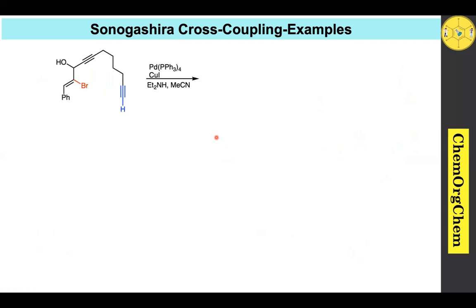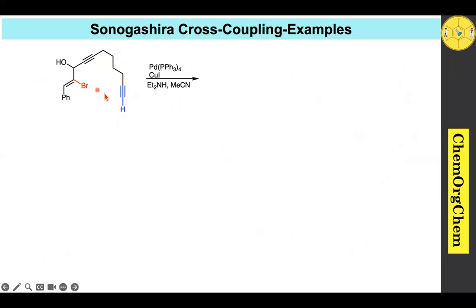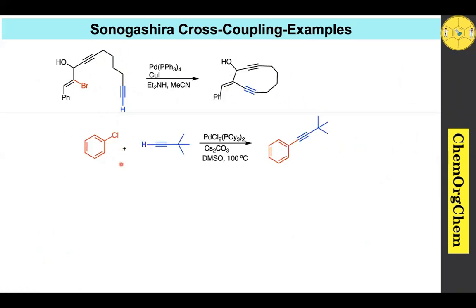Example 8: Up to now we have seen intermolecular Sonogashira cross-coupling. This example demonstrates intramolecular Sonogashira cross-coupling. Both the bromide substituent and the alkyne are present within the same molecule, and under the reaction conditions, they couple to produce a cyclic compound.